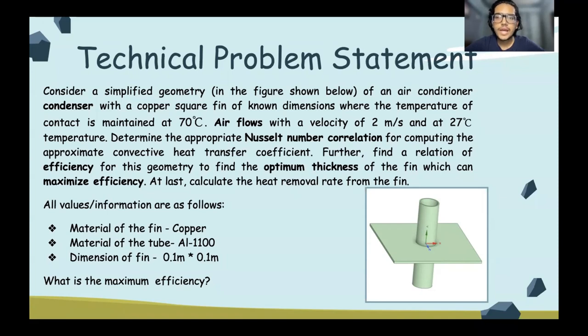We have to determine the appropriate Nusselt number correlation for computing the approximate h, which is the convective heat transfer coefficient. Further, we have to find the relation of efficiency for this geometry to find the optimum thickness of the fin, which can maximize efficiency. And this is our ultimate goal for this problem, which is to maximize the efficiency. At last, we have to calculate the heat removal rate from the fin.